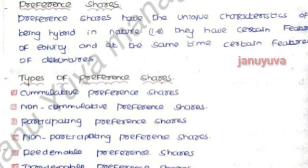The two columns are preference shares. Here are the types: cumulative preference share, non-cumulative, participating preference share, non-participating, and redeemable and irredeemable. First, cumulative. Cumulative means if you come to a preference, you can carry forward.